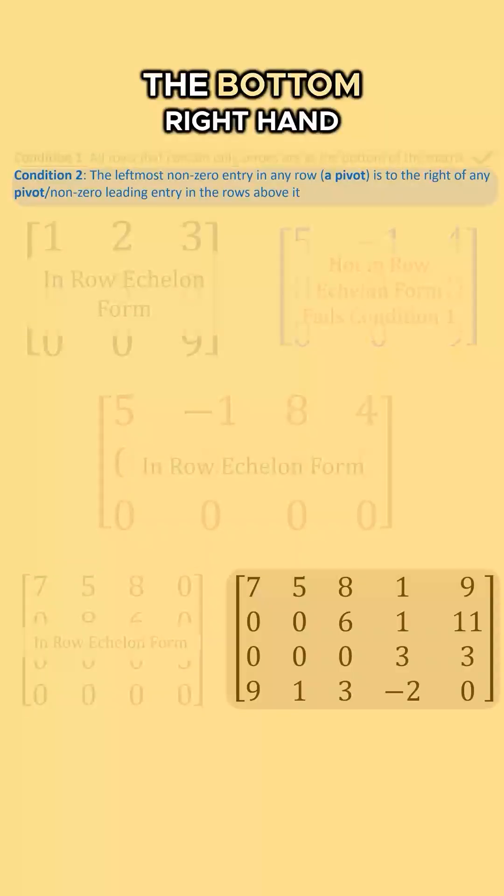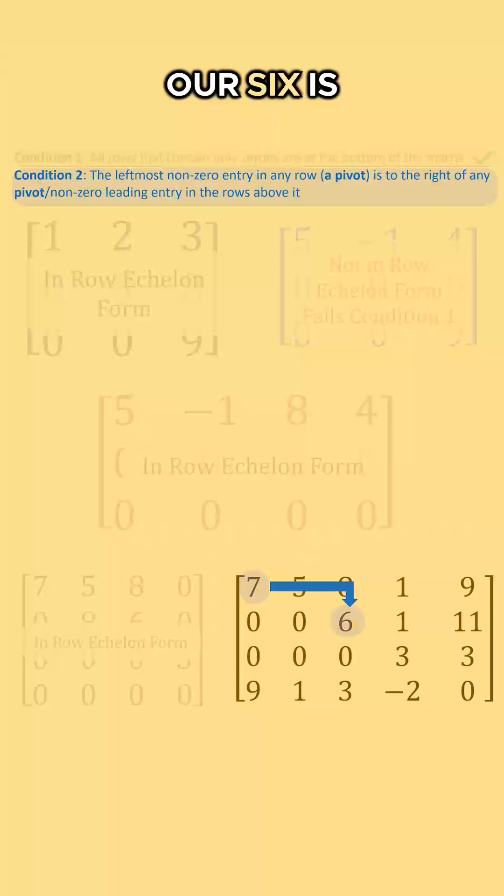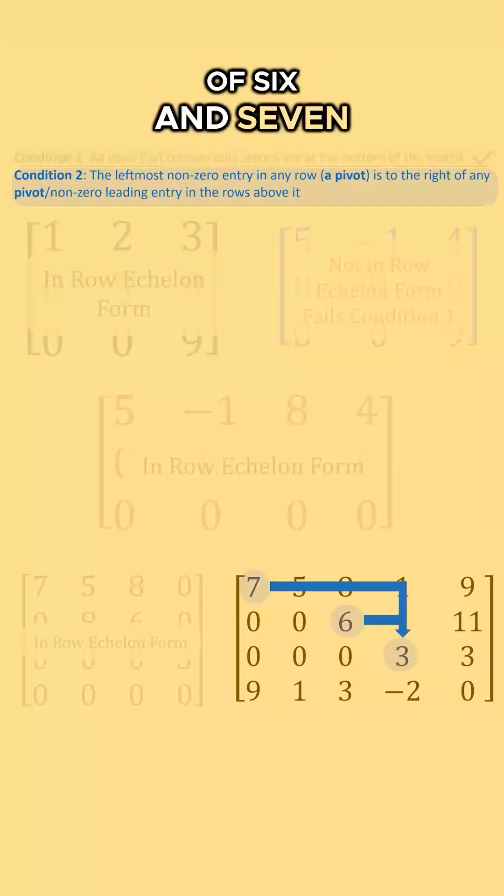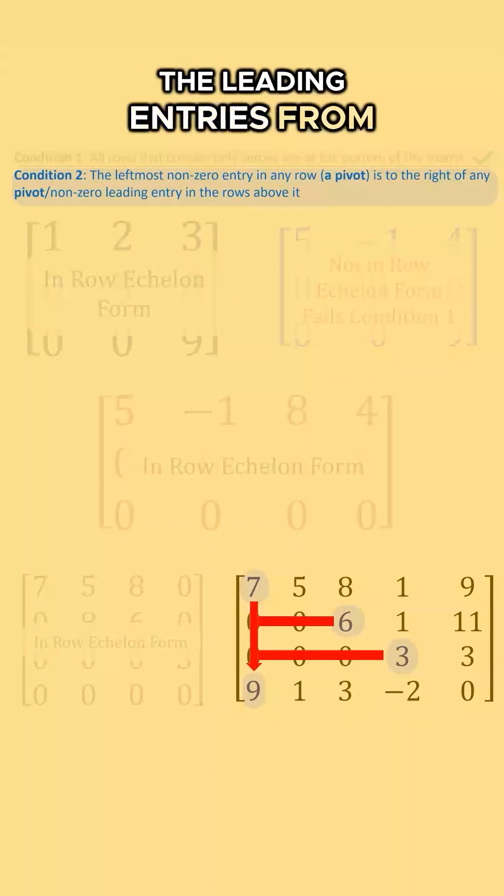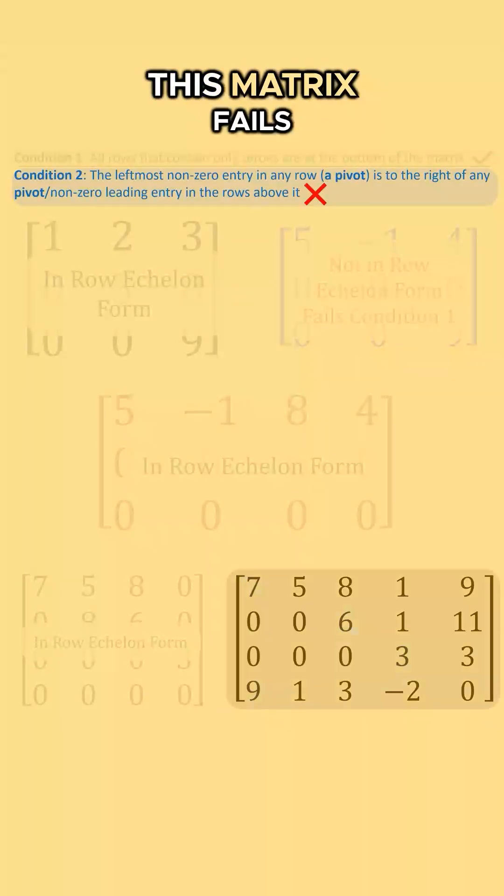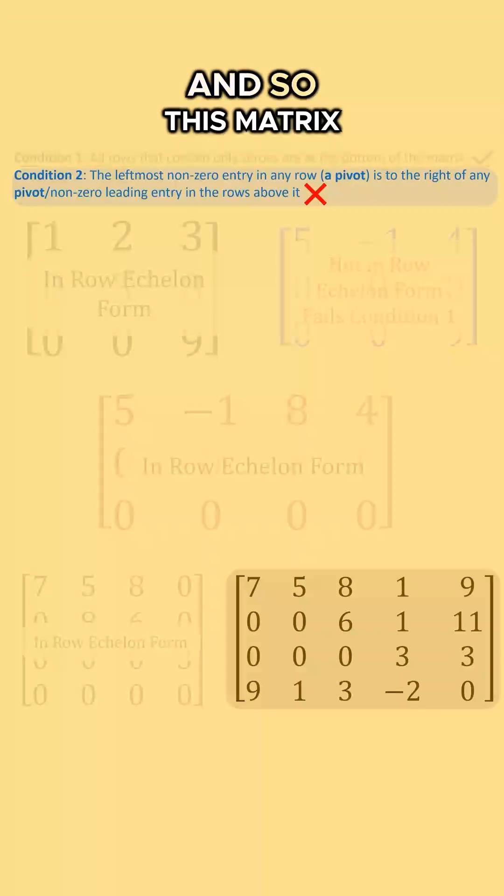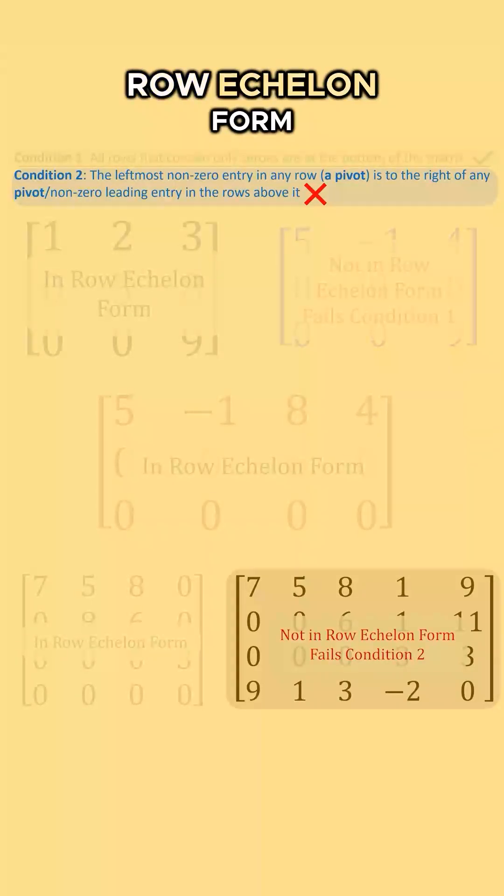Finishing up with the matrix in the bottom right hand side, our six is to the right of seven, the three is to the right of six and seven, but what about this nine in the bottom row? It is not to the right of any of the leading entries from the rows above it. This matrix fails the second condition and so this matrix is not in row echelon form.